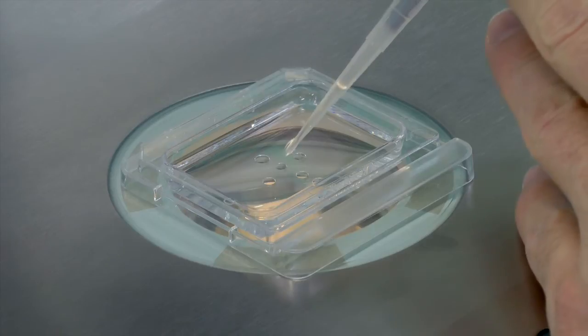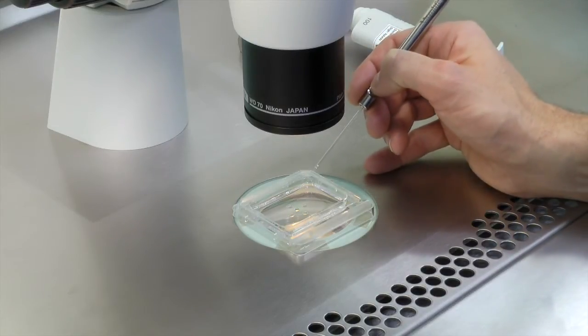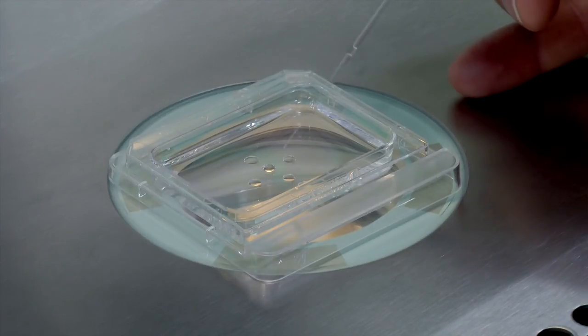Add sperm to the ICSI droplet and the denuded oocytes to the GMOPS Plus droplets. Place one oocyte per droplet and limit the number of oocytes you have per ICSI dish. The oocytes are now ready to be injected.